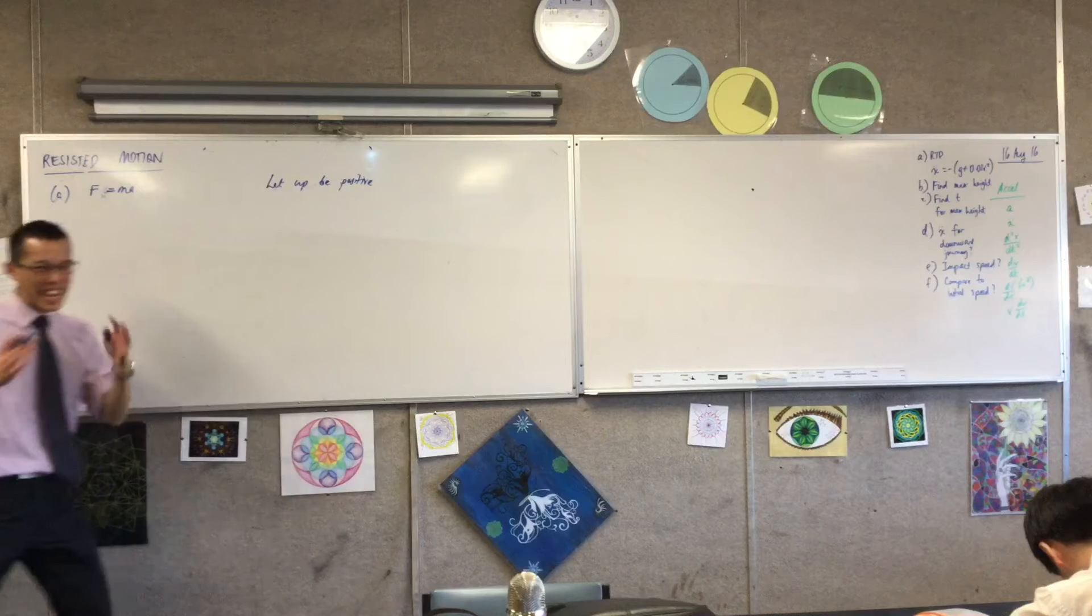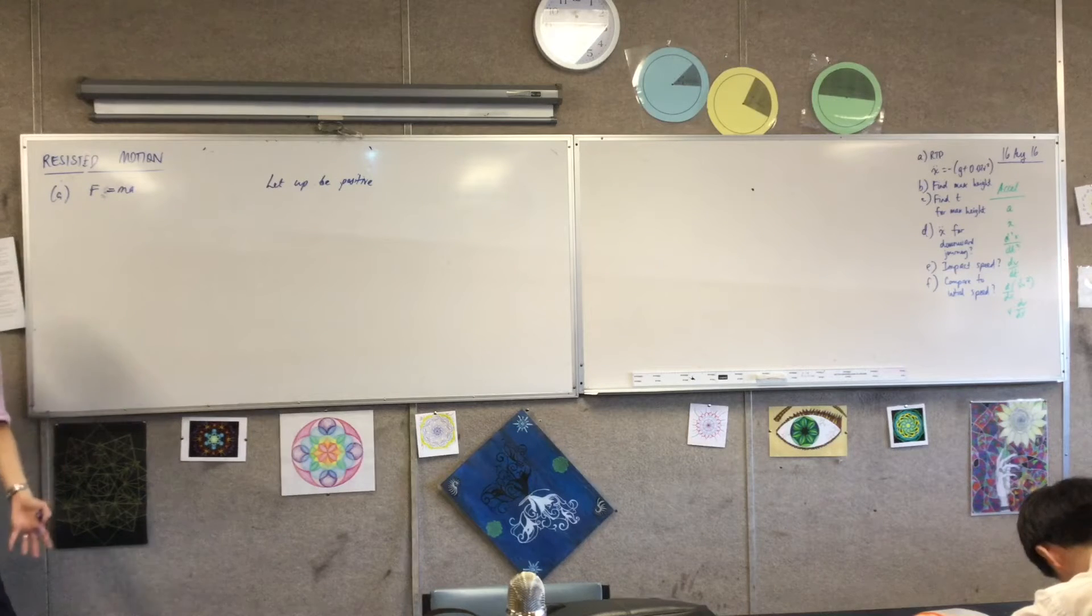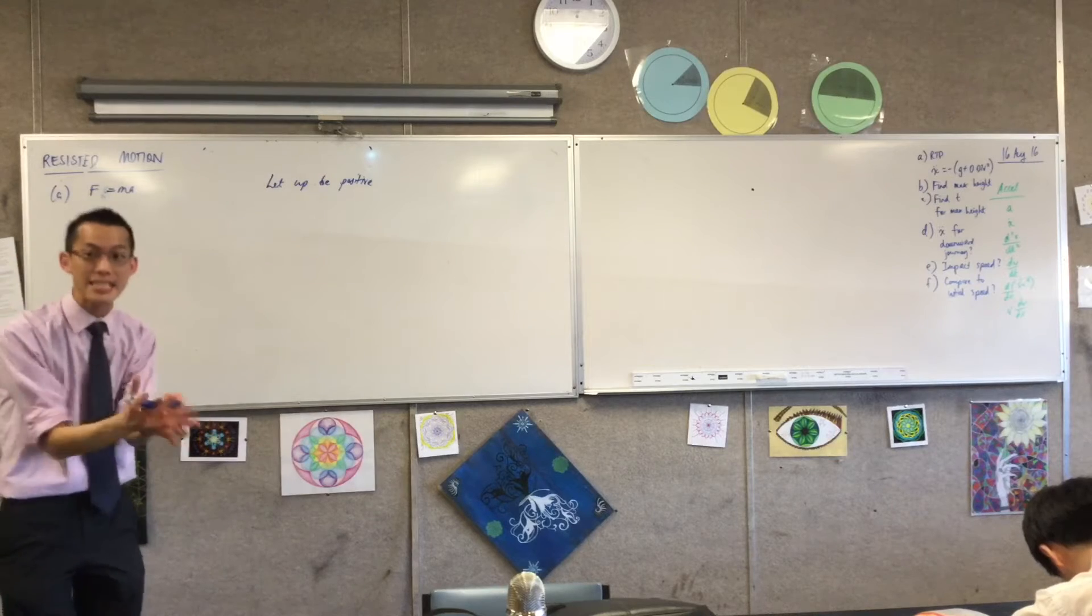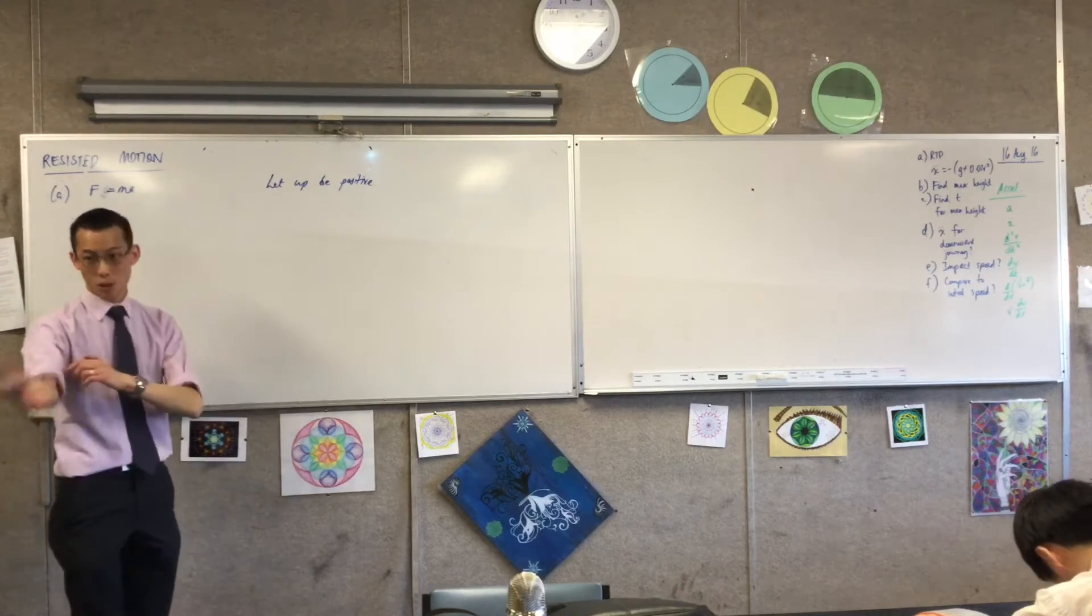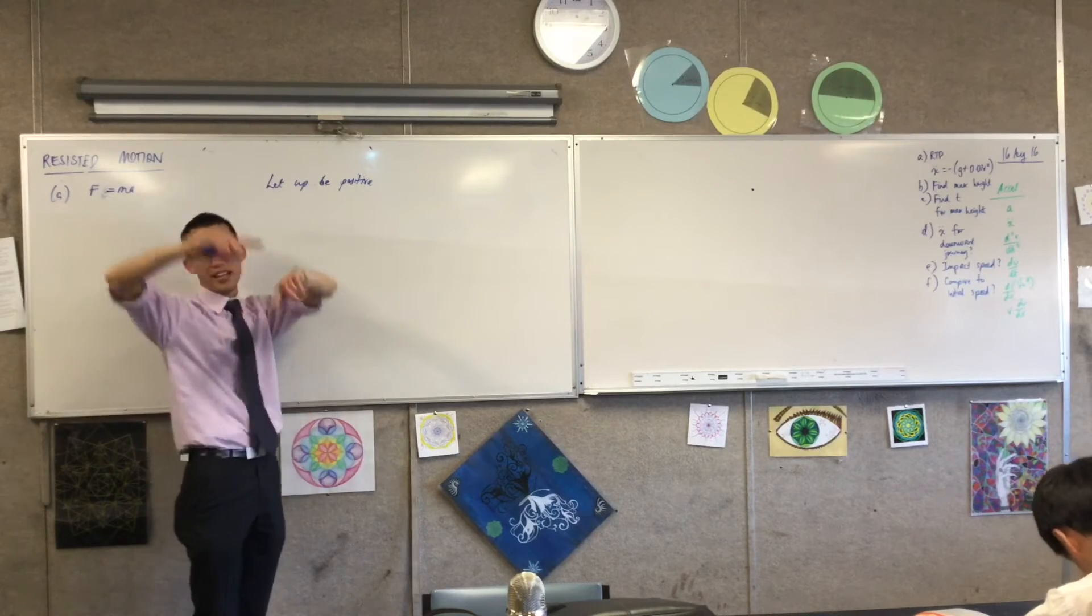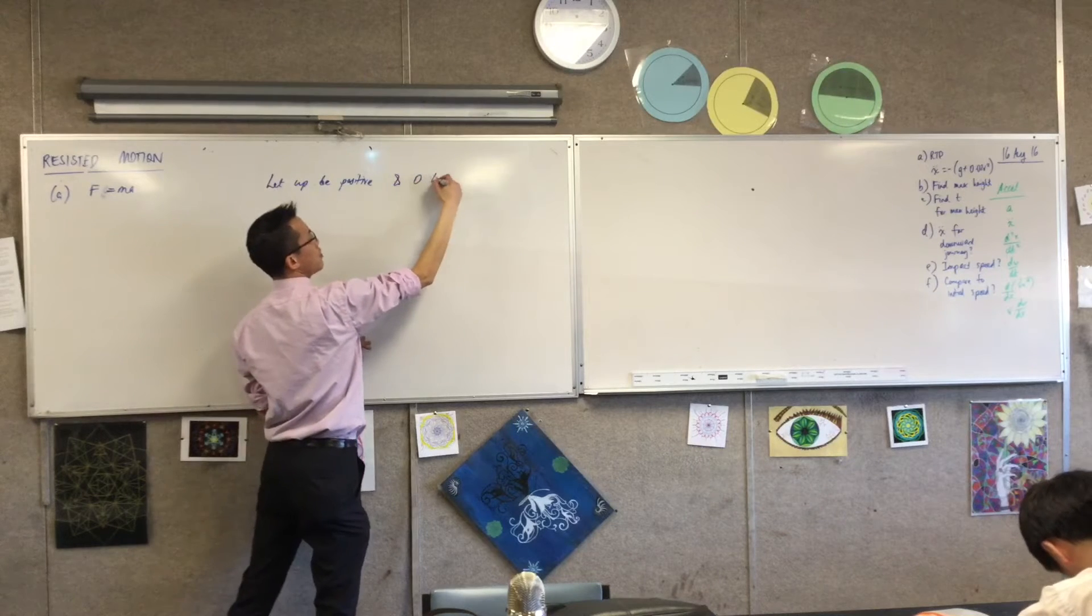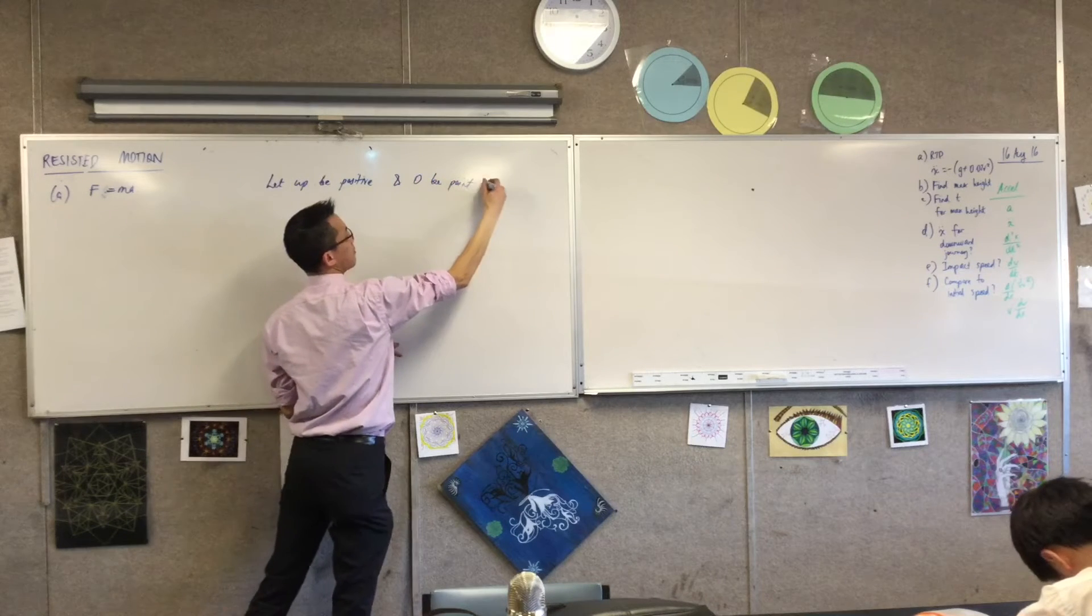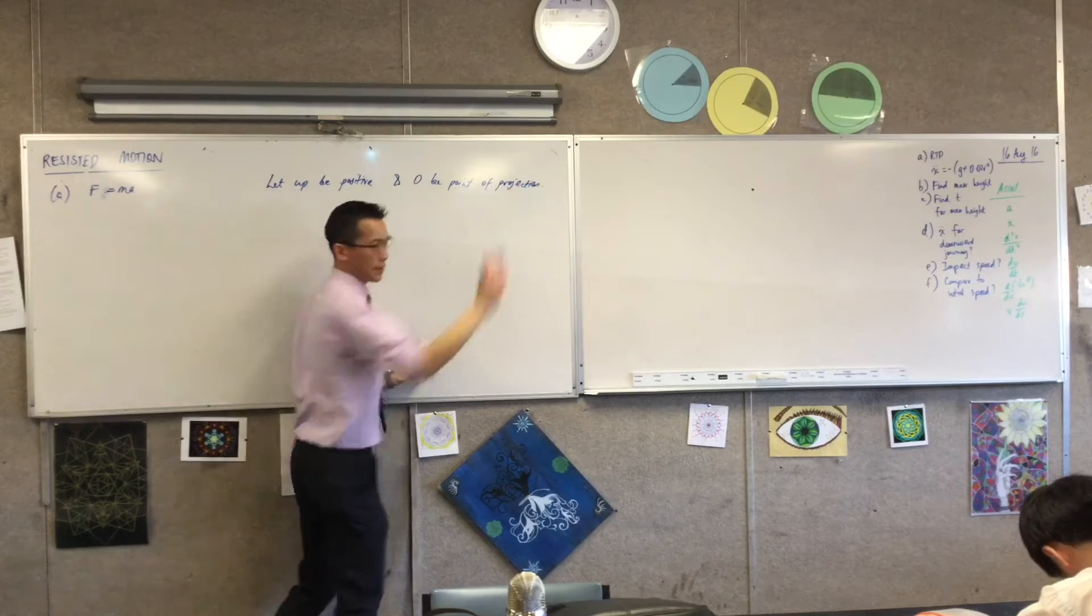Hold on a second. I can't say X equals zero, because X equals zero, by definition, is the origin. So I need you to tell me, what is X equals zero and what would you like to be? I think probably the ground is fine. I'm going to call it the point of projection, because I might not be on the ground. I could be up in the air or something like that. So I'm going to say, let up be positive, and O be point of projection.